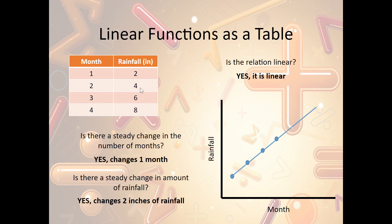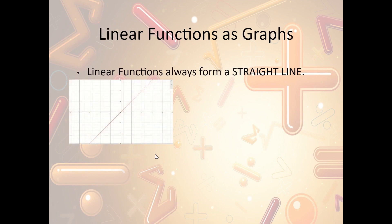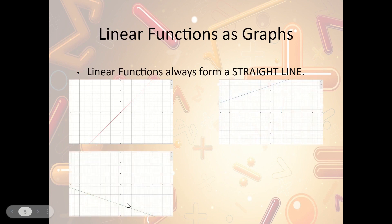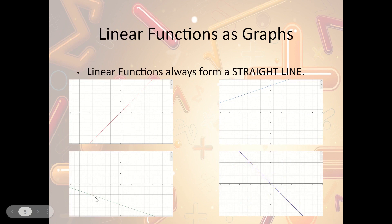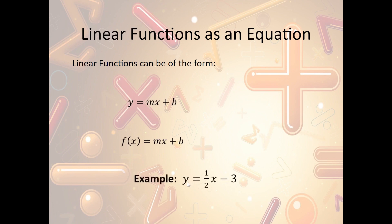From graphs, the rule is they form a straight line. So examples include lines going up, down, steep, or flat — all are linear functions. How can we recognize linear functions as an equation? It should be of the form y = mx + b, or f(x) = mx + b. An example would be y = ½x − 3 — this is a linear function. Notice the powers for both y and x are one.